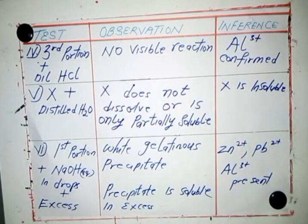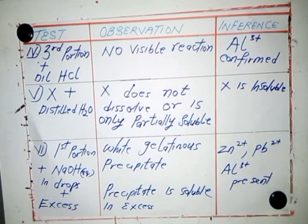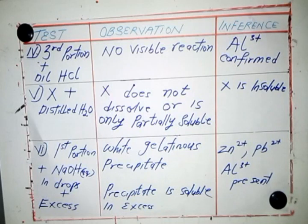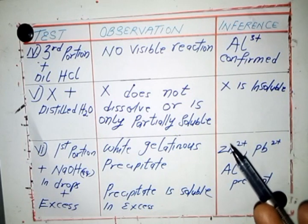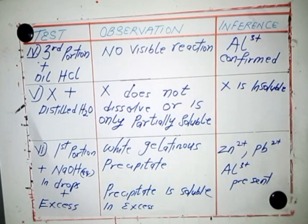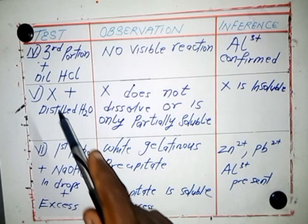Normally the next test would have been to confirm chloride ions using nitric acid, silver nitrate, and aqueous ammonia. However, silver nitrate was not provided in the specimen, so I will not add that test and will go straight to the next set of tests for zinc carbonate, which is X.